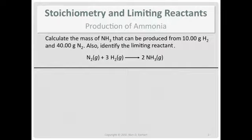Same problem as before, but I'm going to show you a different way to do the calculation. Right, so we have 10 grams of hydrogen, 40 grams of nitrogen, and we're looking for the mass of ammonia